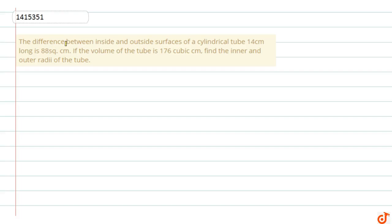We are given that the difference between the inside and outside surfaces of a cylindrical tube which is 14 cm long is 88 cm square. If the volume of the tube is 176 cm cube, we have to find the inner and outer radii.